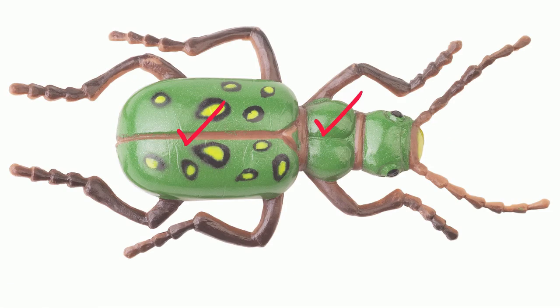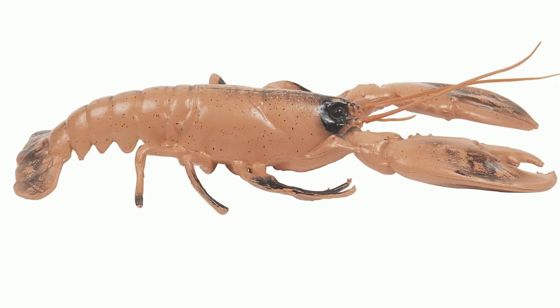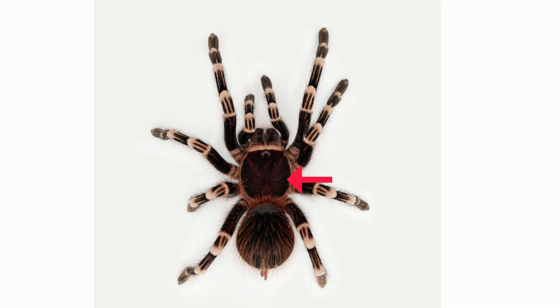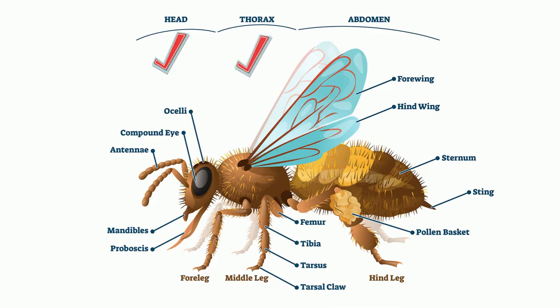Another trait is bodies with regions. If you take a look at a lobster or an insect, you will notice that their body is made up of more than one segment. A spider has two segments and an insect has three.